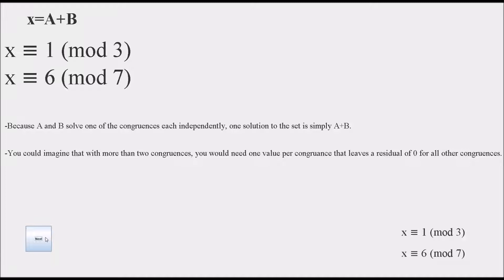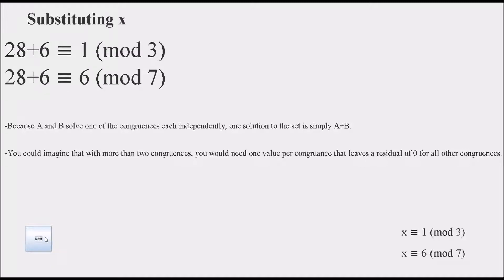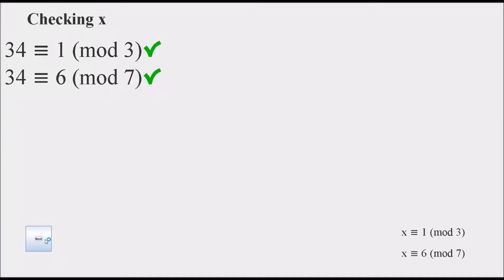So now that we have A and B, with A affecting only one equation and B affecting the other, we can simply add them to find x. So substituting A plus B for x, we find that x is 34. 34 does end up to be congruent to 1 mod 3 and 6 mod 7, and here is the visualization.